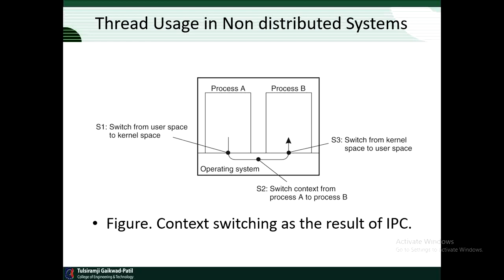Because IPC requires kernel intervention, a process will generally first have to switch from user mode to kernel mode. As shown as S1 in the diagram, this requires changing the memory map in the MMU as well as flushing the TLB. Within the kernel, a process context switch takes place, after which the other party can be activated by switching from kernel mode to user mode again. This latter switch again requires changing the MMU map and flushing the TLB.